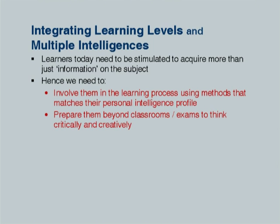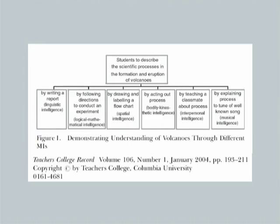Maybe this is the time for us to understand that we need to involve learners and prepare them — not just to retrieve certain facts, but to develop their thinking to a level where they are able to be critical and creative. This is where we are trying to merge multiple intelligence and Bloom's taxonomy — the learning levels — so that we can stimulate them and take them to a level where they are critical and creative.